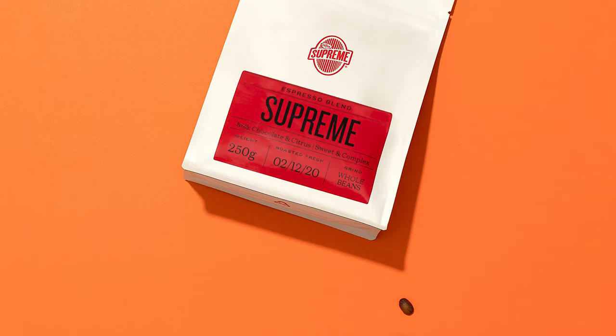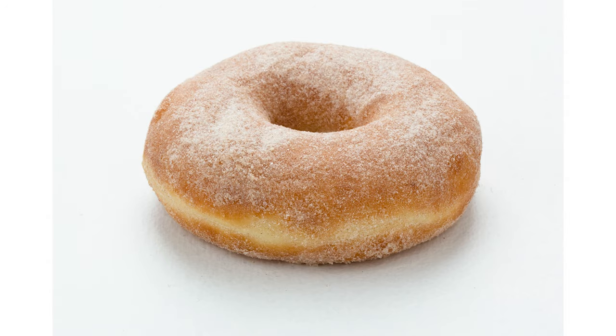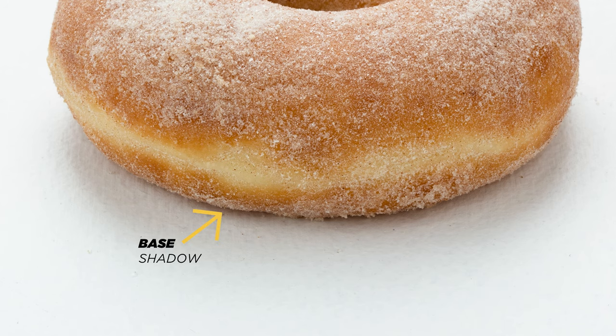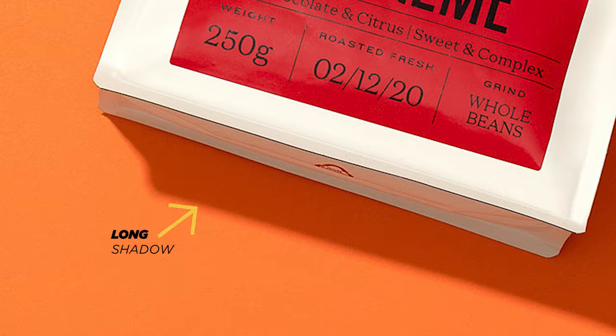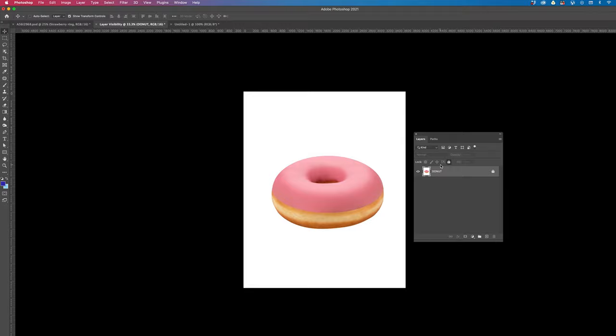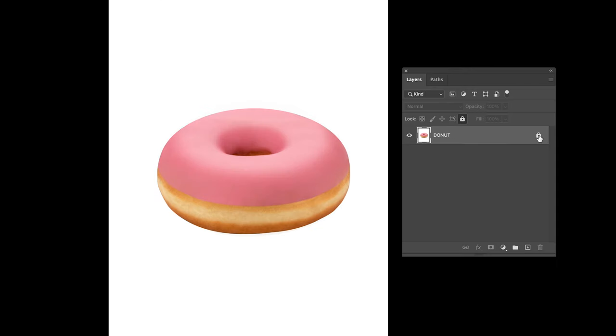Well, firstly, there are two types of shadows: hard shadows and soft shadows. Notice that both shadows have a base shadow and also a long shadow. So, to begin, let's start with trying to create a soft shadow and let's use this donut shot for the first example.